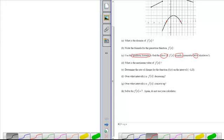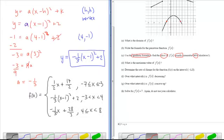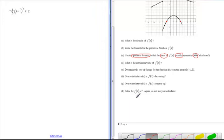So the equation we had before looked like negative one-third times x minus 1 squared plus 2. I want to set that equal to zero because I want to find the zeros and start solving.